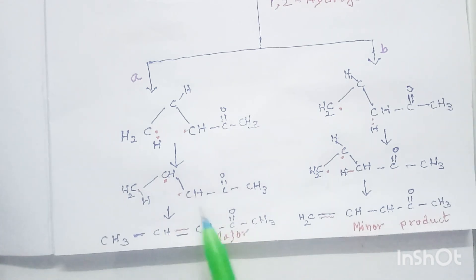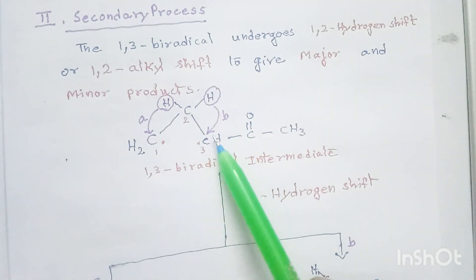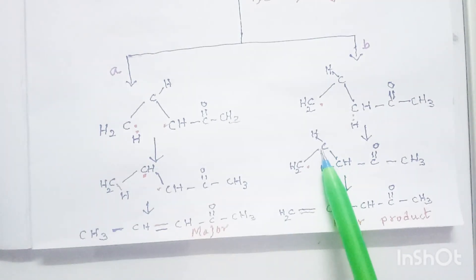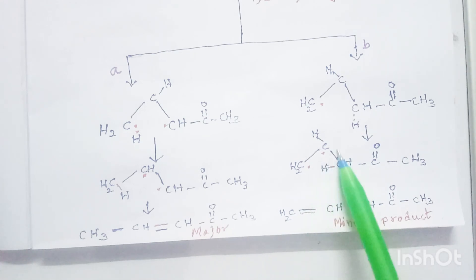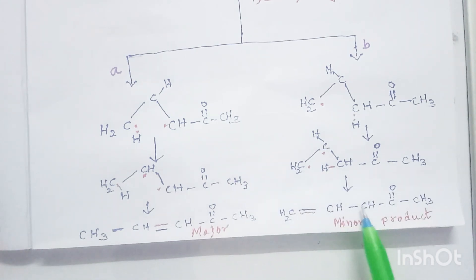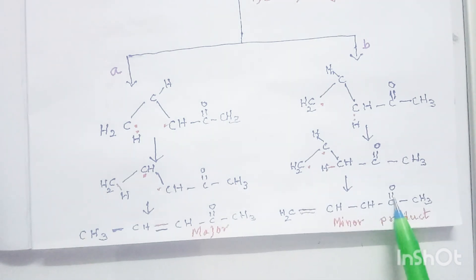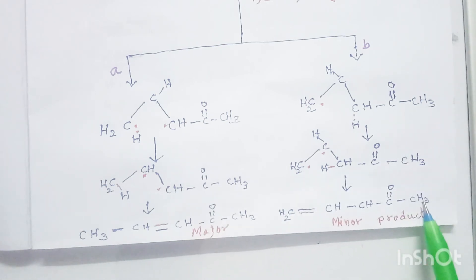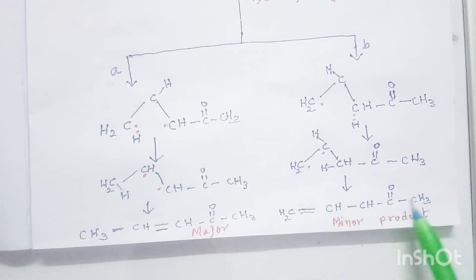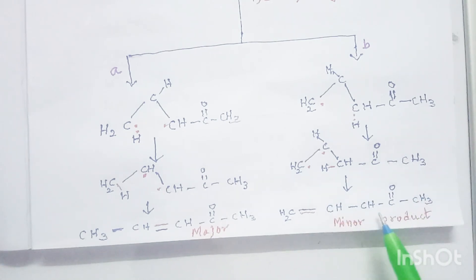Now let us see what happens in route B, when the hydrogen shifts to this CH radical. This hydrogen has shifted to this radical and forms a bond, so the radical shifts to the adjacent carbon atom. This radical and the other radical together form a bond, giving us CH2=CH-CH2-CH3. This is a minor product because this product cannot resonate, so it is less stable. These are the beta cleavage reactions.